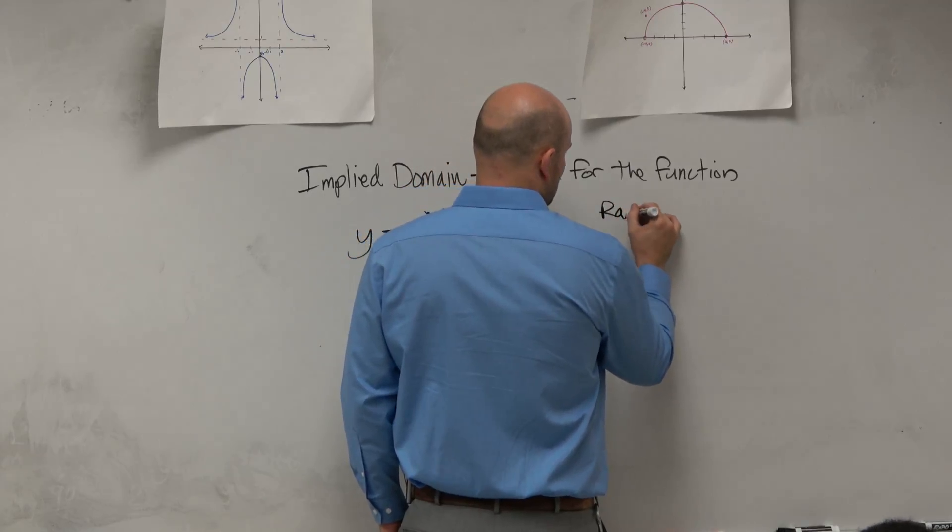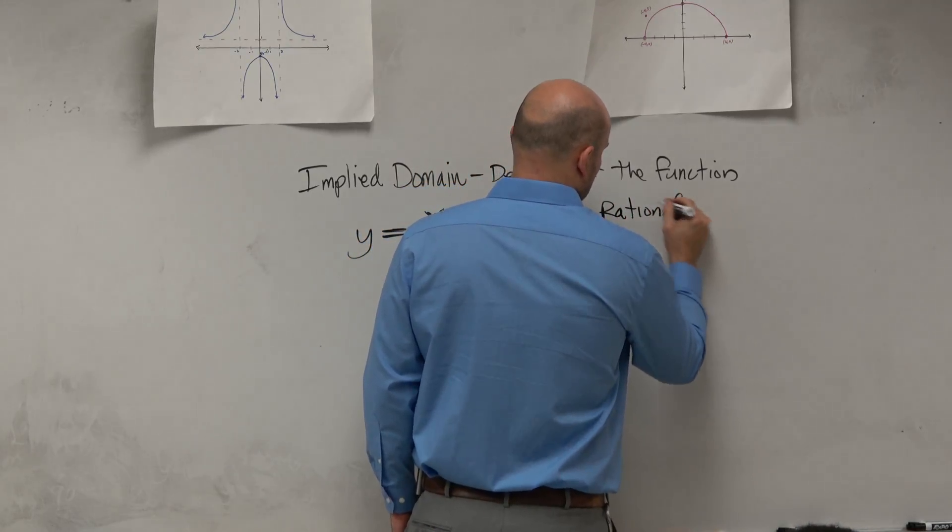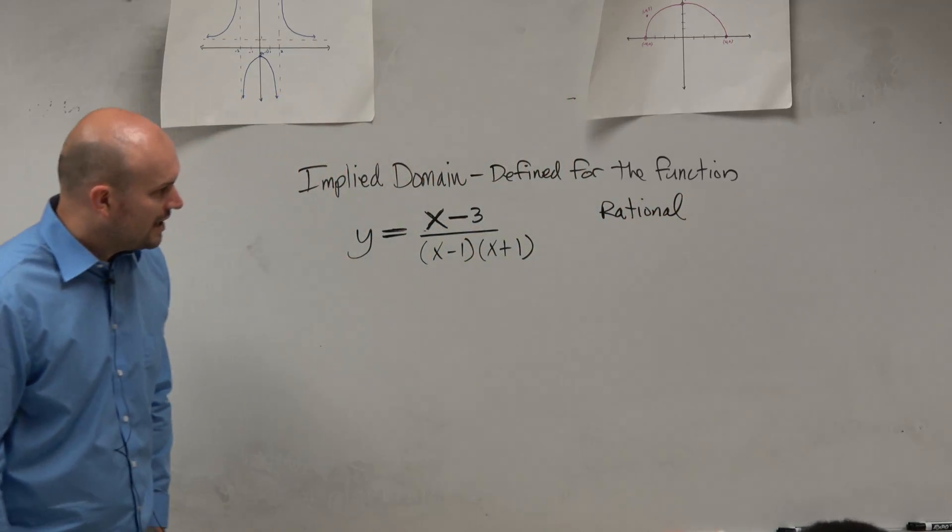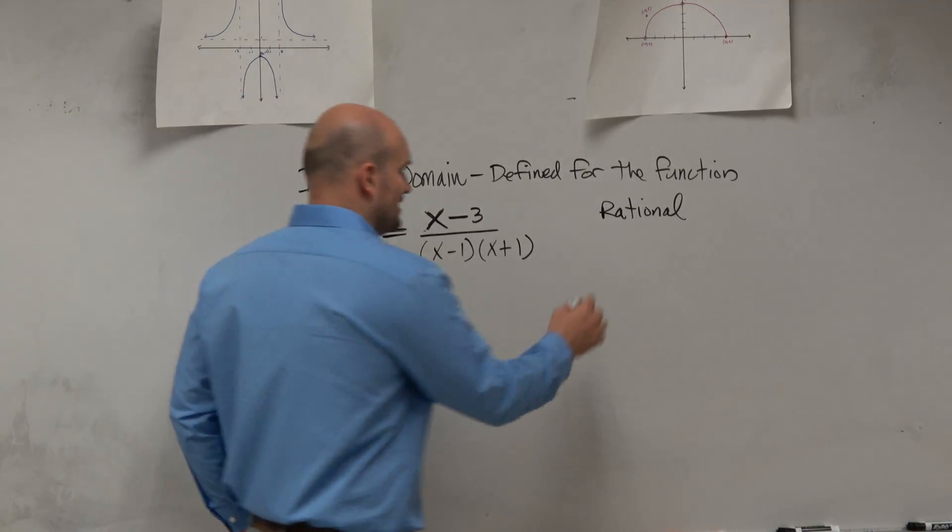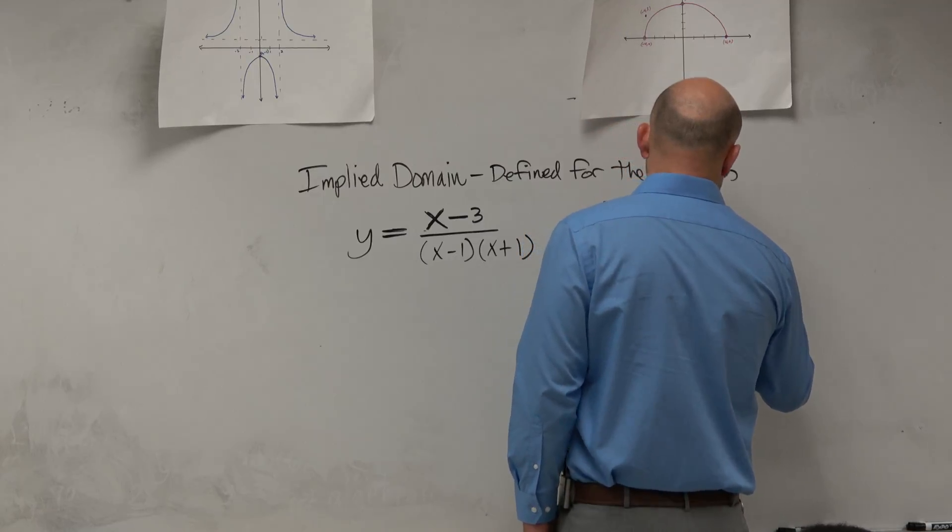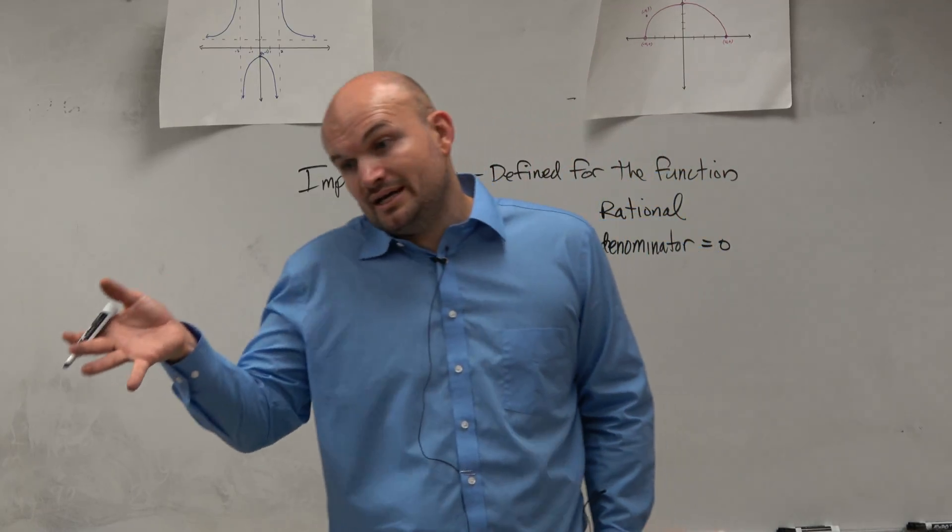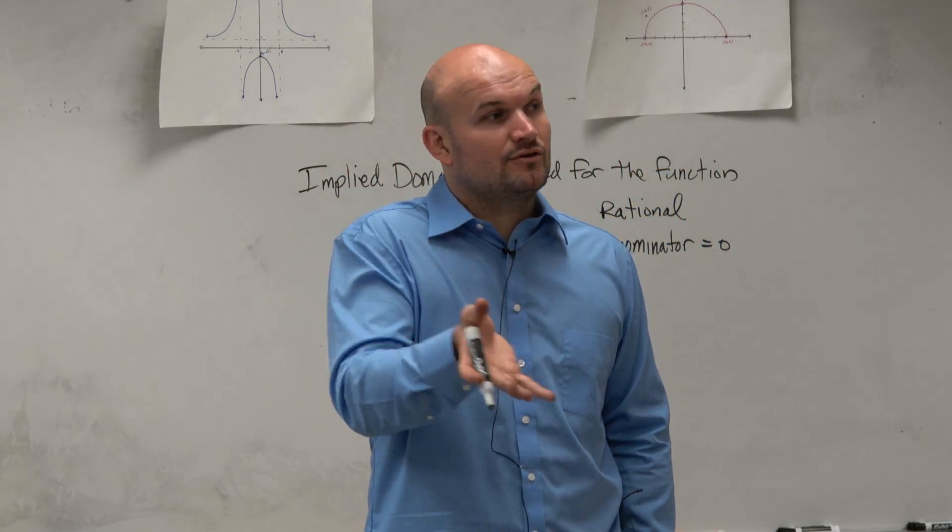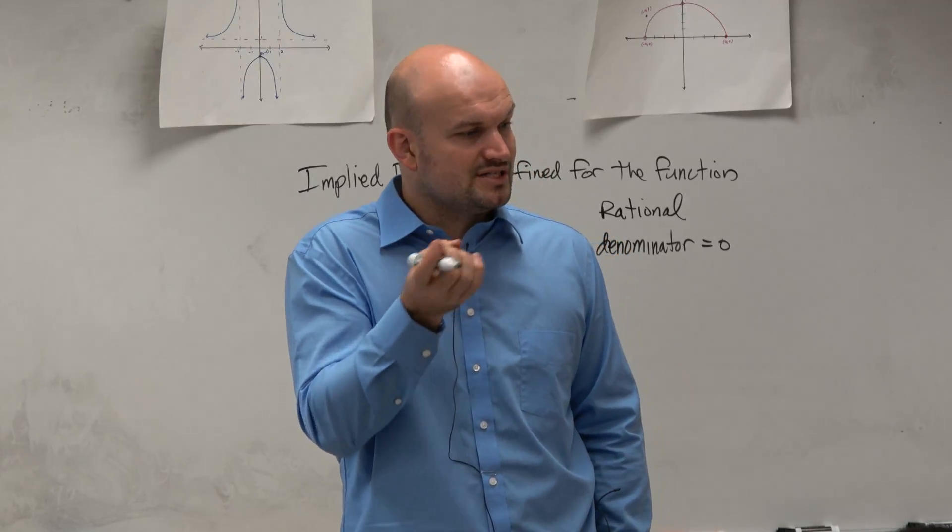Which was a radical and a rational. So when we're dealing with a rational, all we're going to do is set the denominator equal to 0. So for radicals, you set the radicand greater than or equal to 0. For the denominator, you just set it equal to 0.